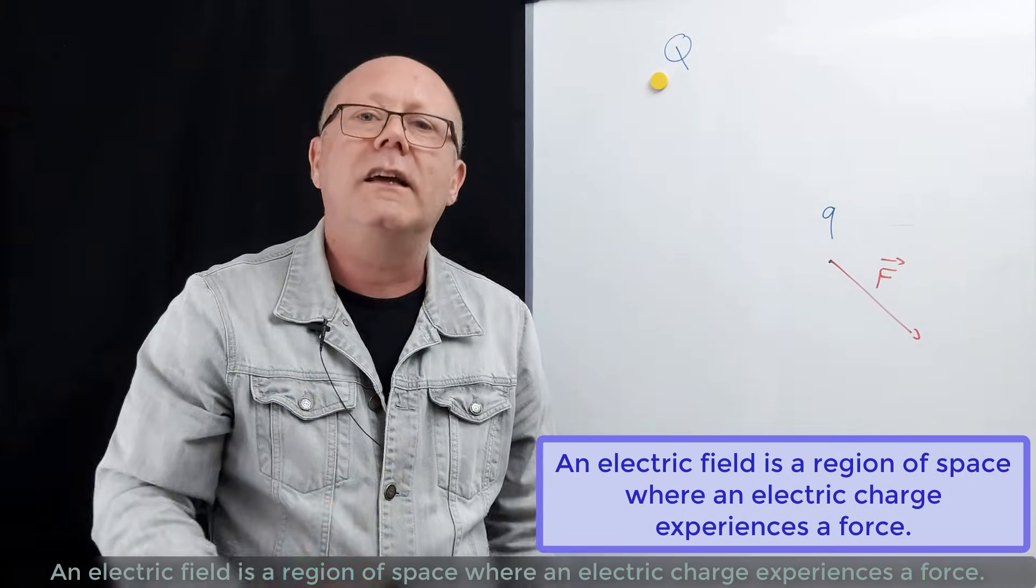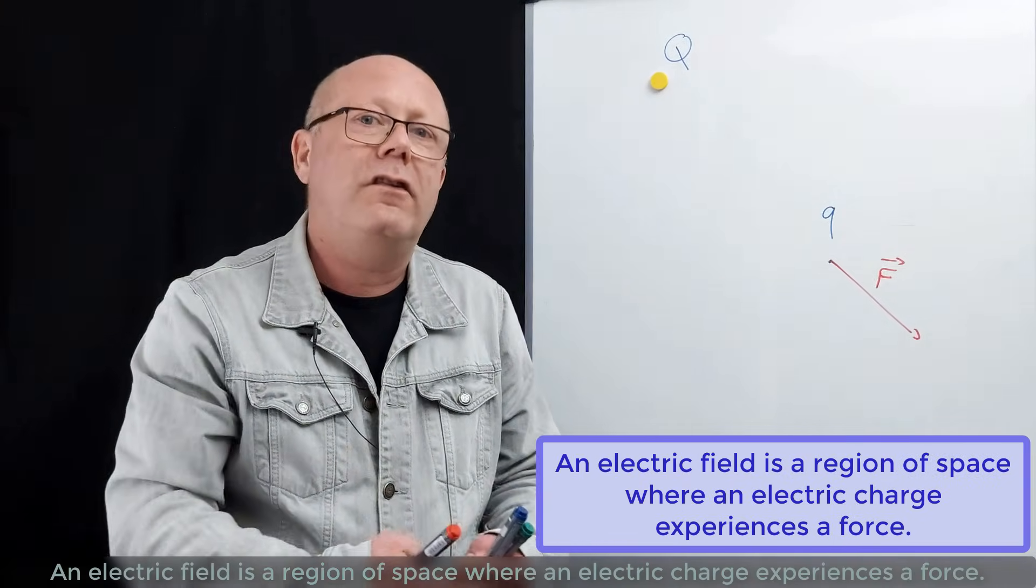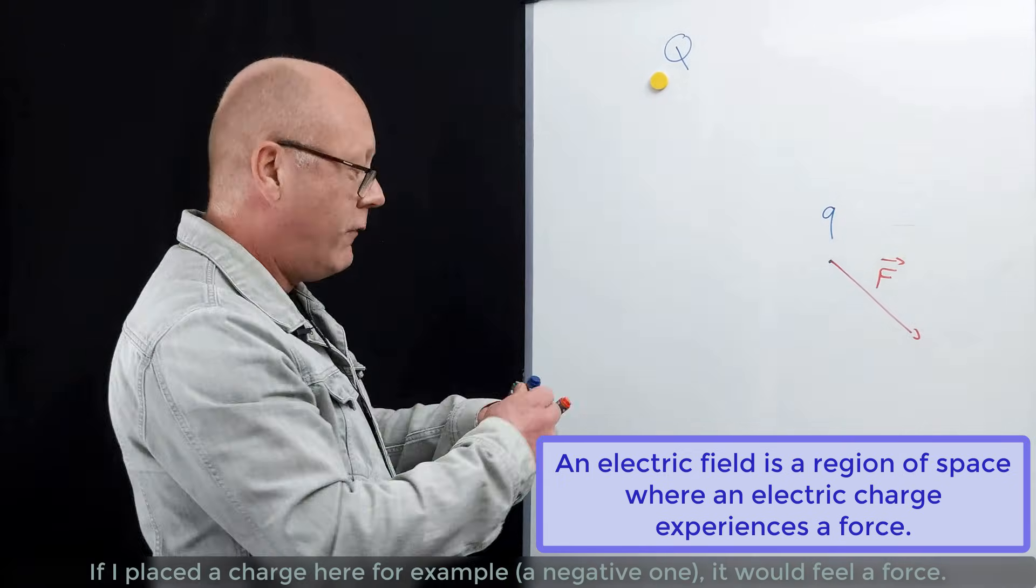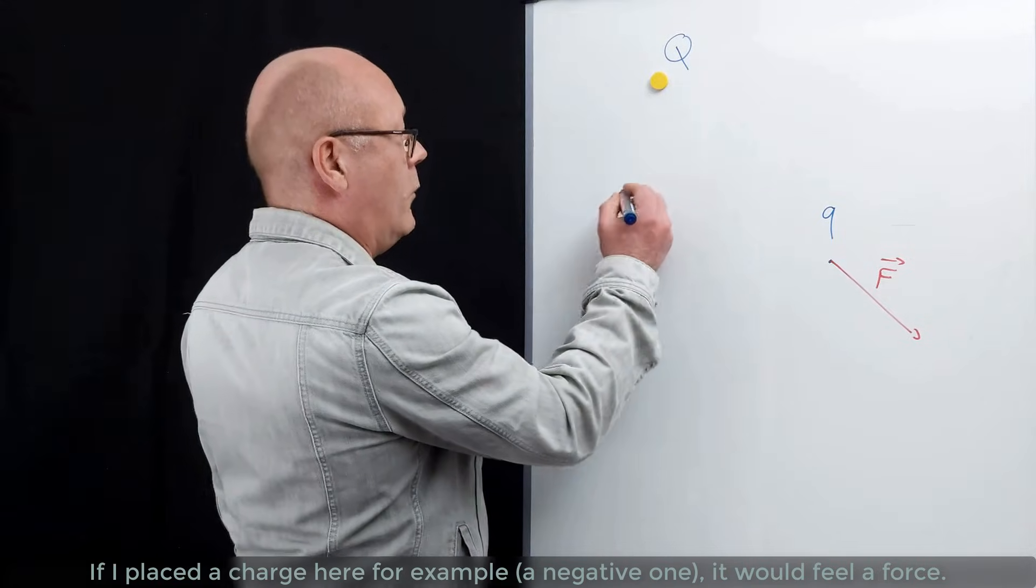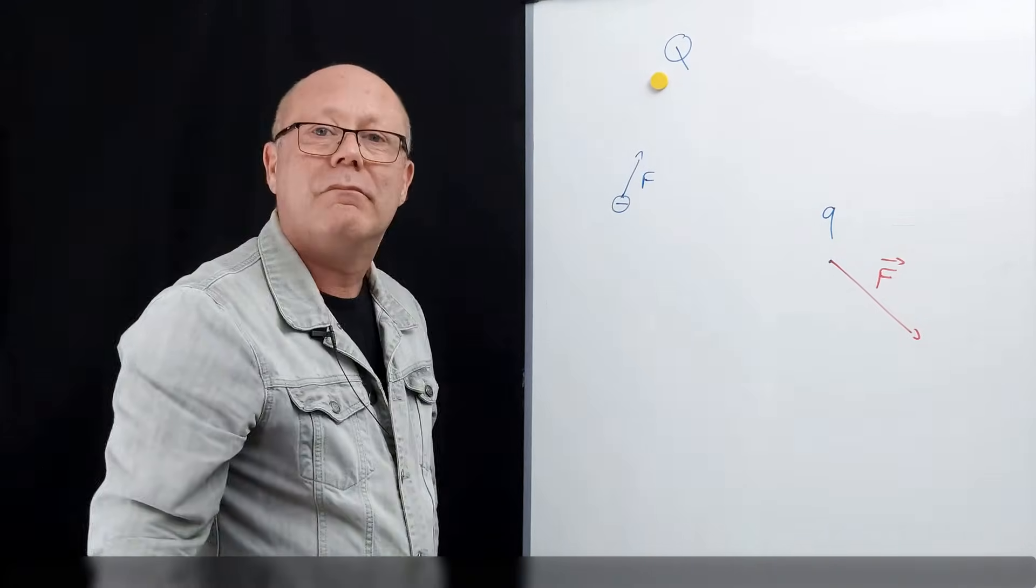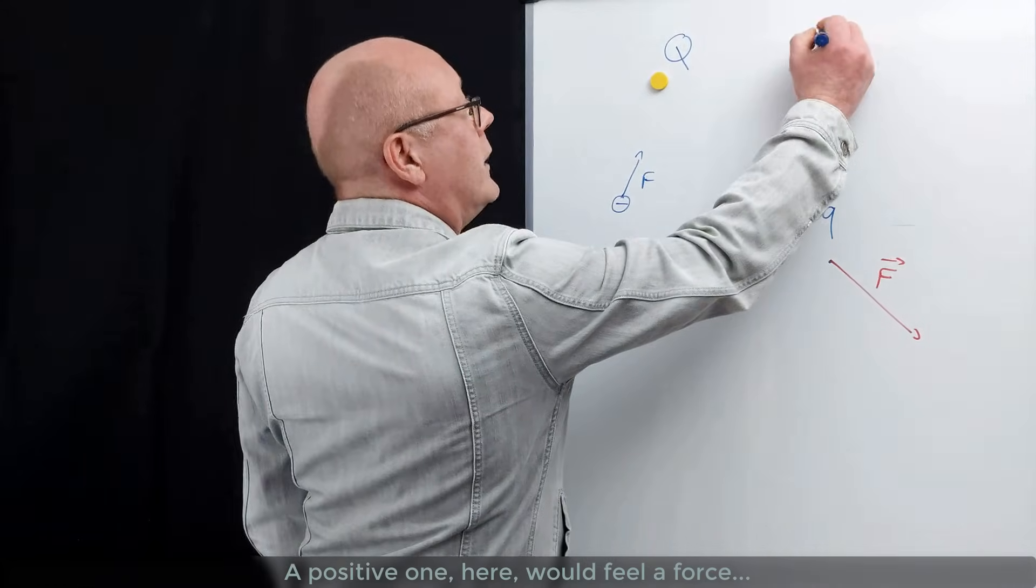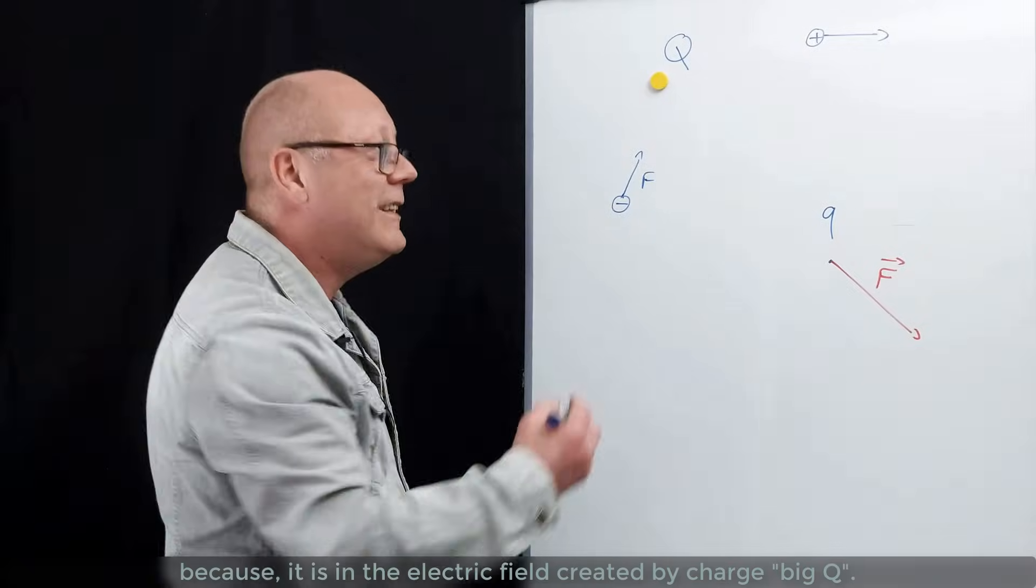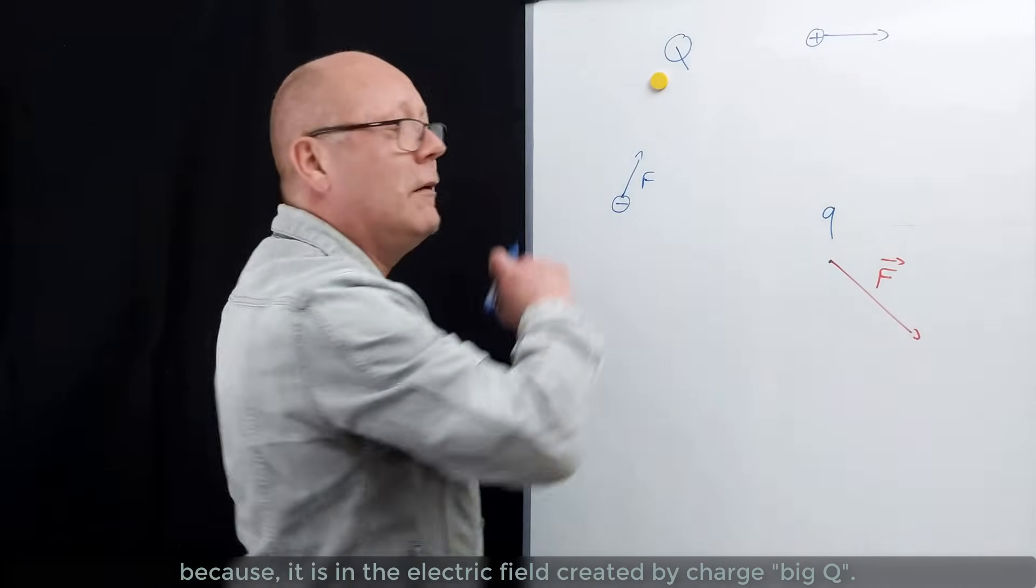Charge Q just created an electric field. An electric field is a region of space where charge experiences a force. So if I placed a charge here, for example, a negative one, it would feel a force. A positive one here would feel a force, because it is in the electric field created by charge Q.